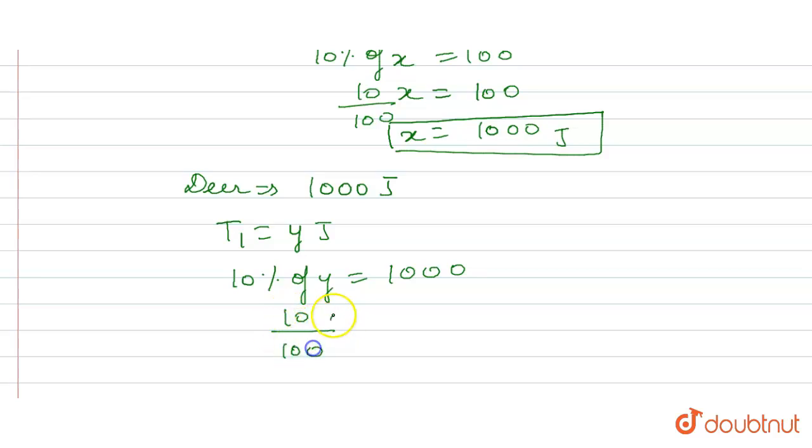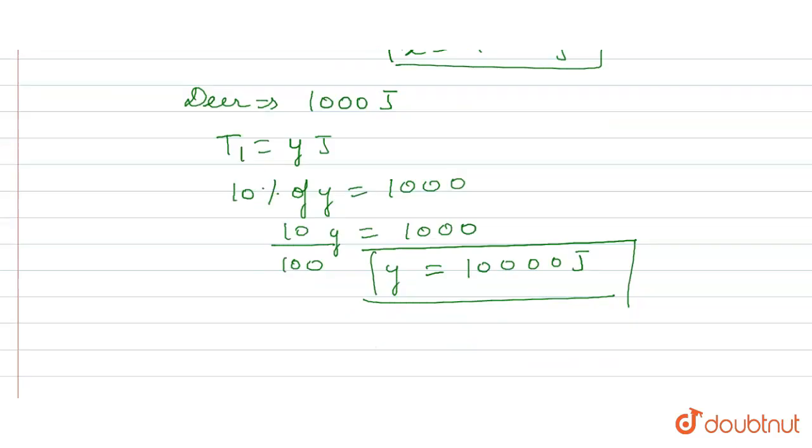So 10 upon 100 of Y is equal to 1000. Then Y is equal to 10,000. 10,000 joules. That means our producers had 10,000 joules energy.